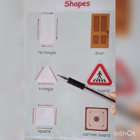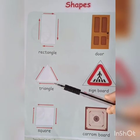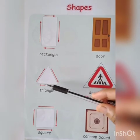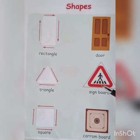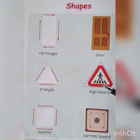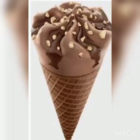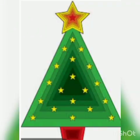And the fifth one is triangle. It has three corners — like a sign board, like a cone ice cream, like the shape of a Christmas tree.